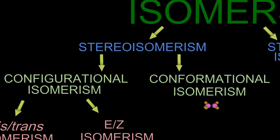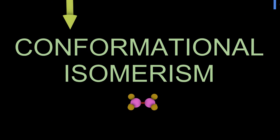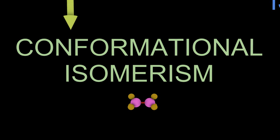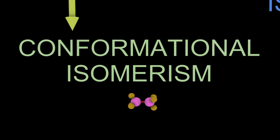Moving on to conformational isomerism — that involves rotation around a single bond, which is always going to be a sigma bond. Single is sigma.